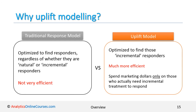Why do we need to develop an uplift model? Why not just develop a traditional response model? That is because a traditional response model is optimized to find responders regardless of whether they are natural or incremental responders. Since most responders are actually natural responders, the traditional response model is not optimized to find incremental responders, and hence it is not a very efficient tool to help companies obtain a desirable business outcome. On the other hand, an uplift model is optimized to find those incremental responders. It is much more efficient, so companies only spend marketing dollars on those who actually need incremental treatment to respond.